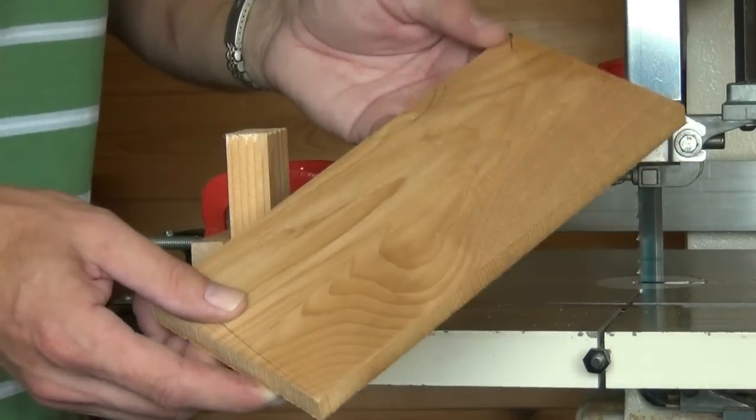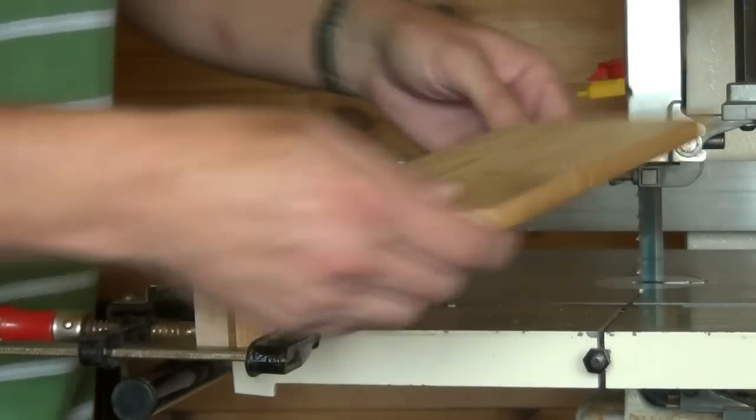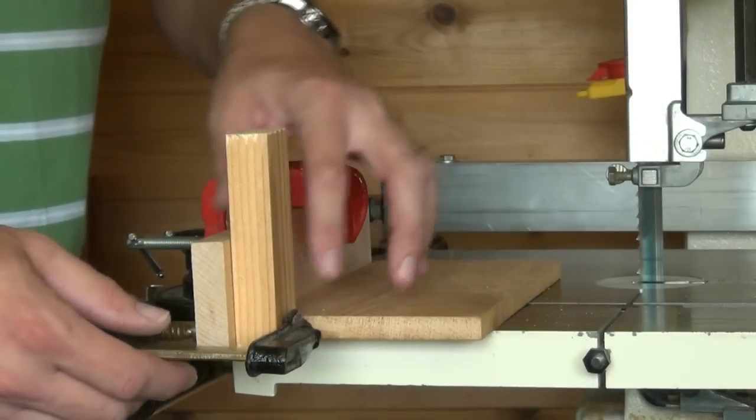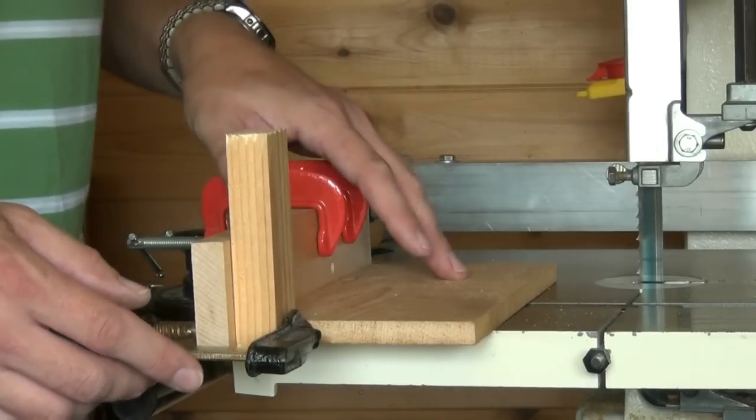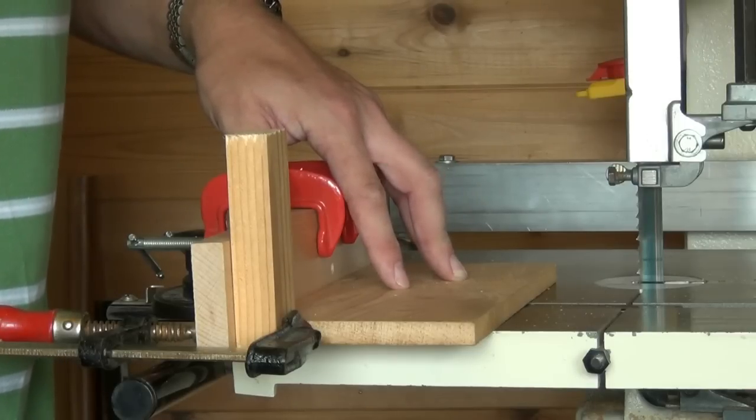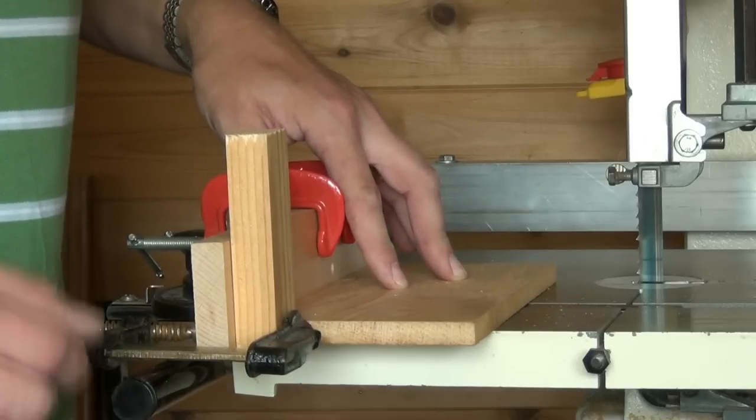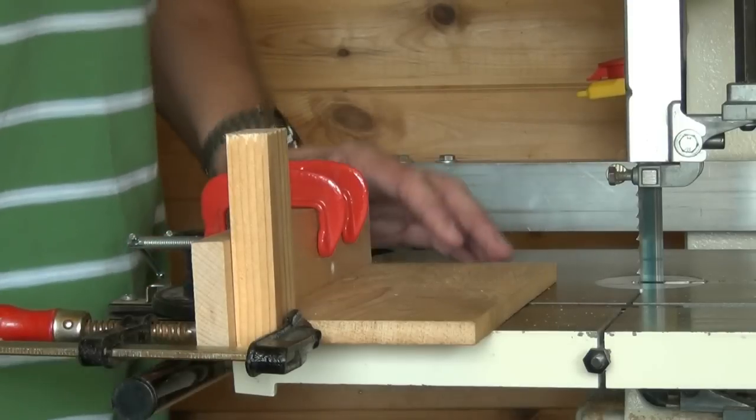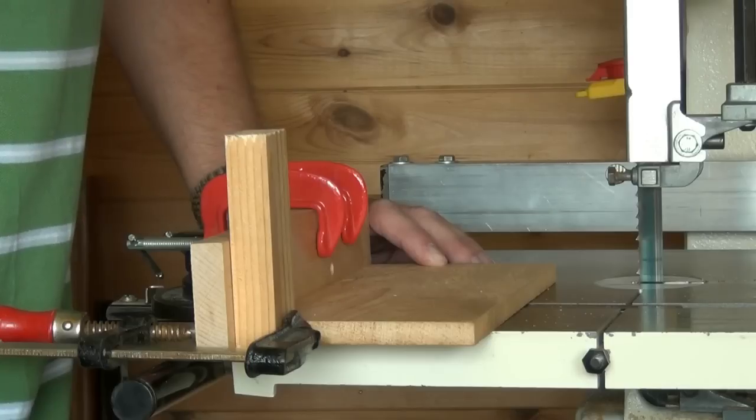If you need to take a little bit more off, leave the stop block where it is and simply insert a paper shim between the stop block and the work, close the gap up and cut again. You can remove a tiny amount of material by inserting a single paper shim, and if you're still short of the mark you can add more shims. Better to start cutting a little bit long and reduce the length than to cut too much off to begin with.